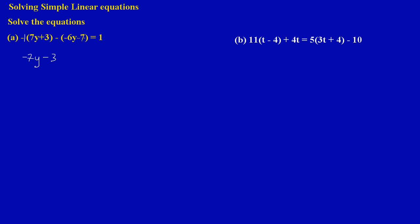Now I'm going to expand and remove my brackets. Treating the second negative sign as negative 1: negative 1 times negative 6y makes the sign opposite — it was negative in the bracket, so when it comes out it must be positive 6y. Again, negative 1 times negative 7 gives positive 7. All of that is equal to 1.